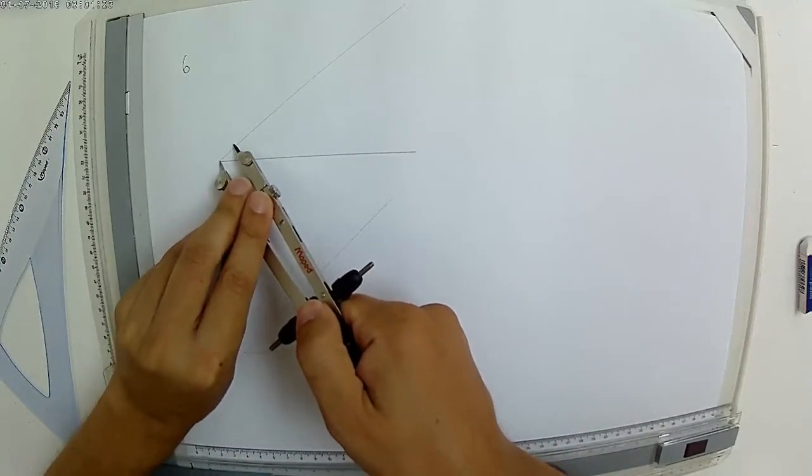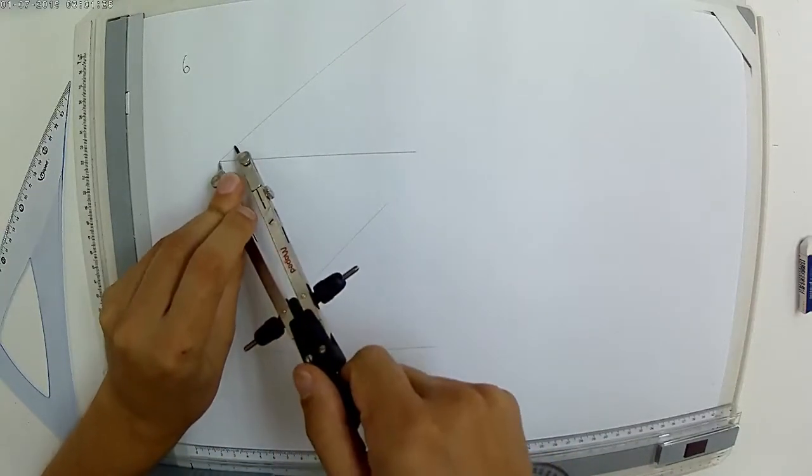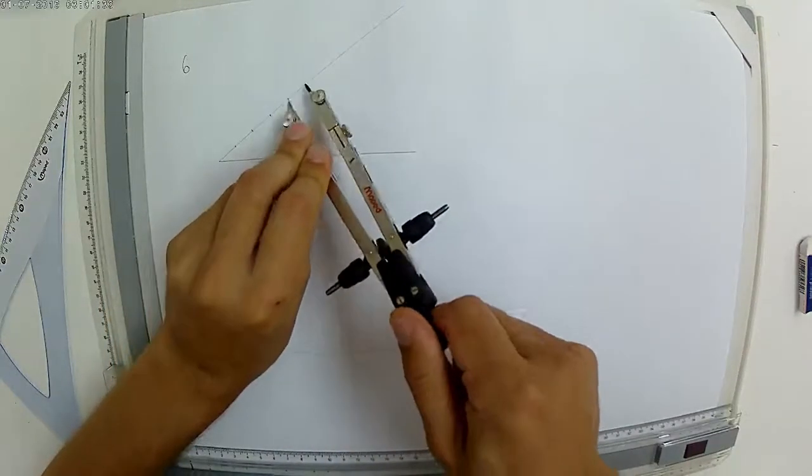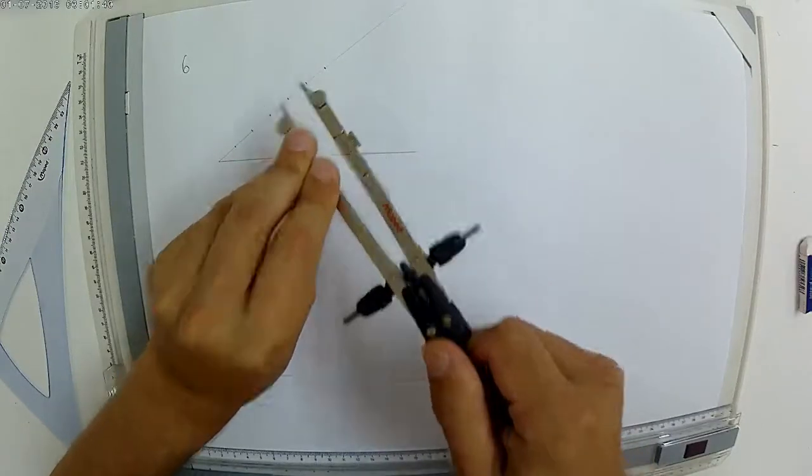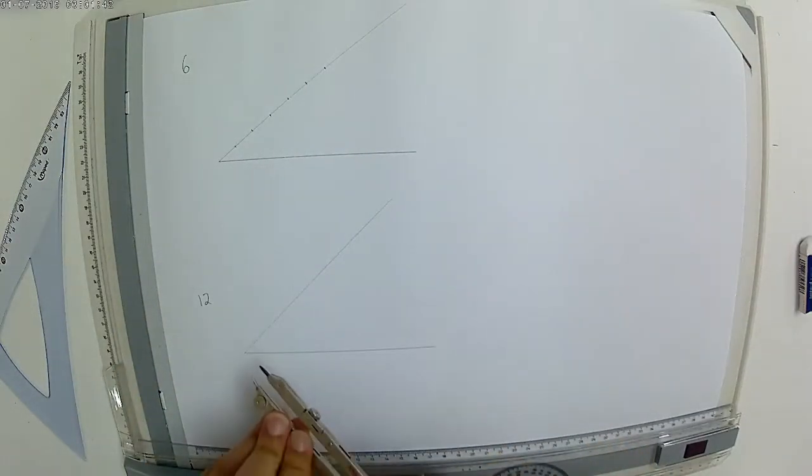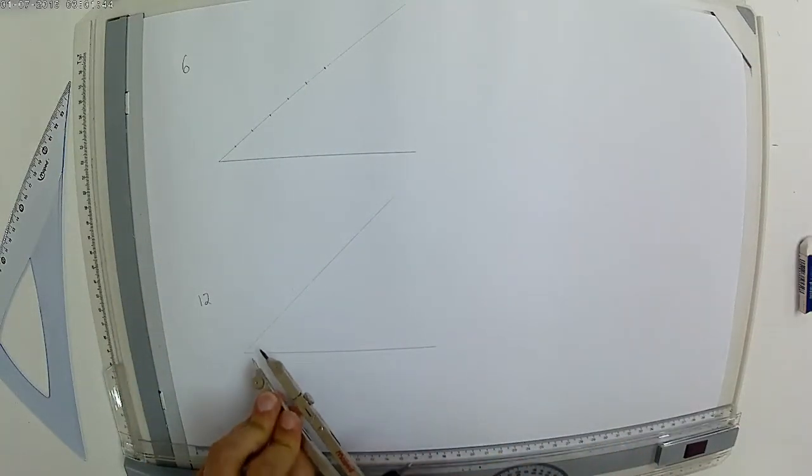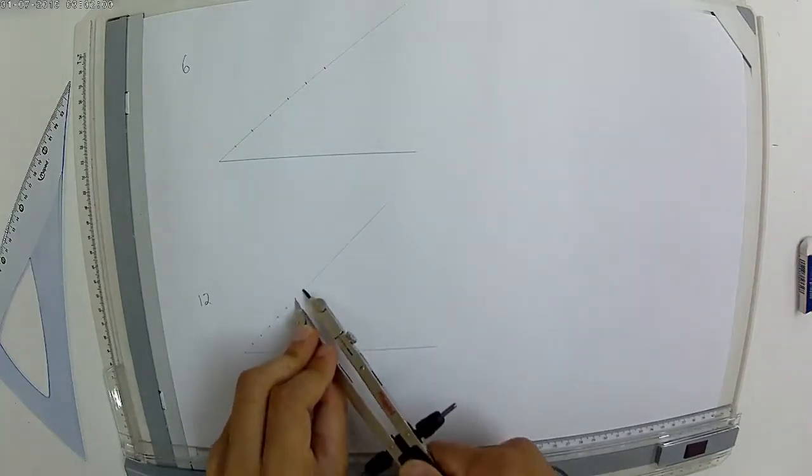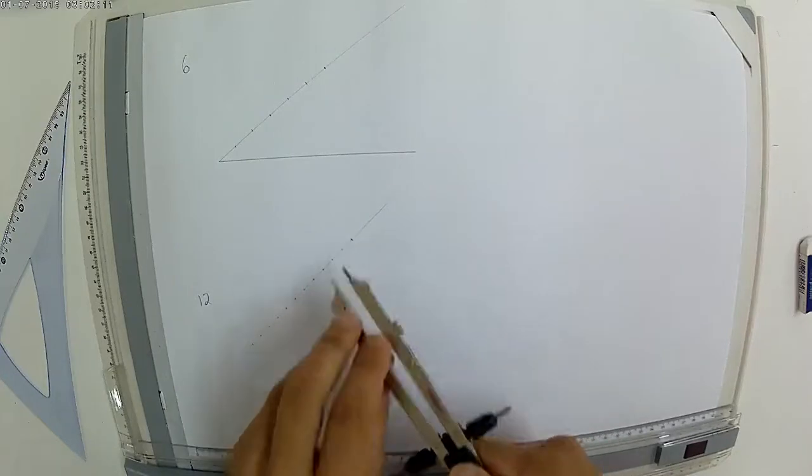You just want to take a measurement where six points can fit equally, and six, and you want to make it a little bit smaller for the top. Okay, there you go.